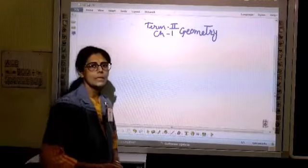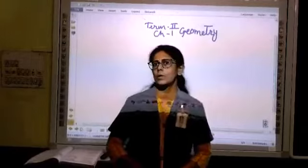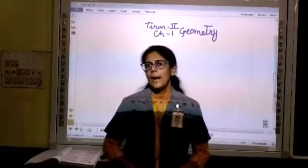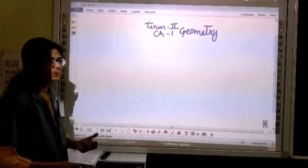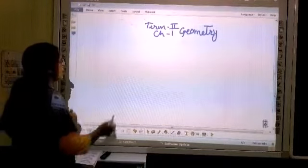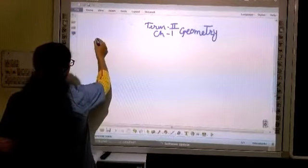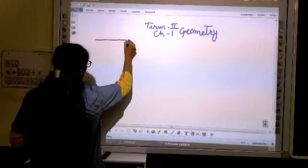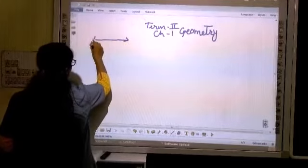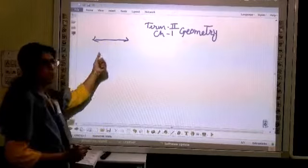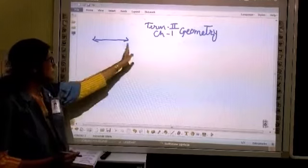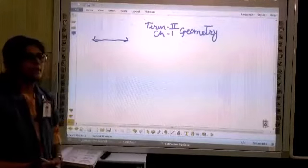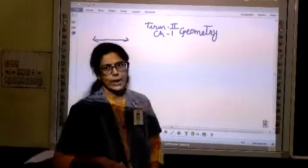In geometry, in the previous class you have already learnt about the point, line, line segment. But we will just remember, recall that thing, okay? So, if arrow is shown both the sides, that is known as a line, right? Line can extend both the sides, it is infinite, we cannot measure the line.